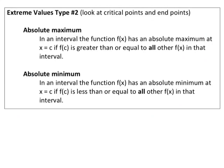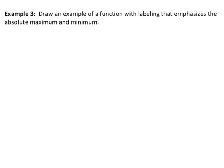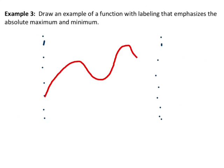Let's draw a picture. Let's take a look at the very next example. It says: draw an example of a function with labeling that emphasizes the absolute maximum and minimum. So let's go ahead and draw something here. Suppose we're working on this interval right here — there's our interval — and we're going to draw a graph that starts off right about here, comes up right about here. It ends right there. So there's our interval.